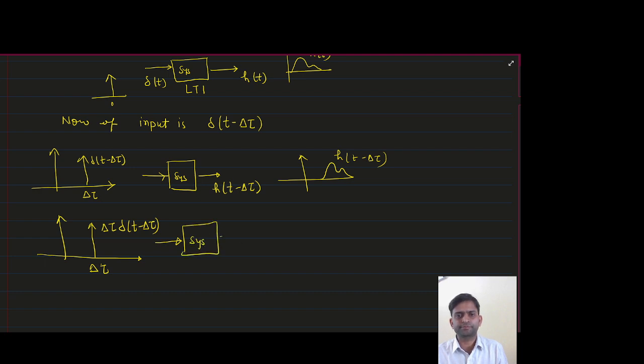So here also the output will be scaled because this is a linear system. This will be delta tau h(t - delta tau).